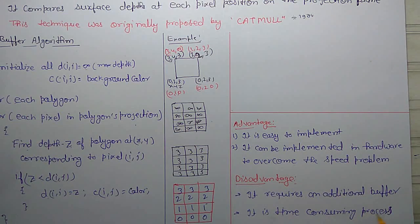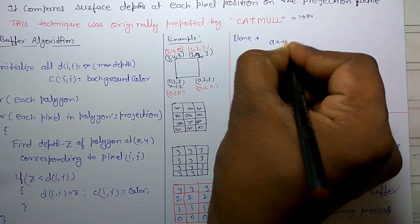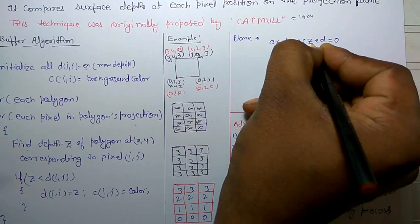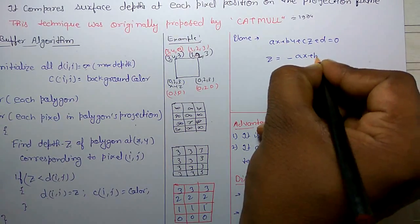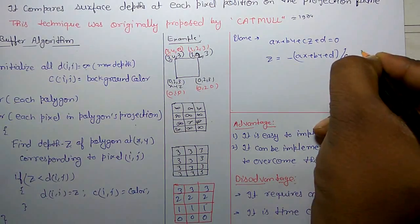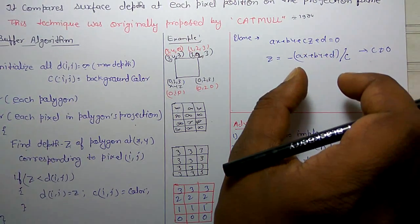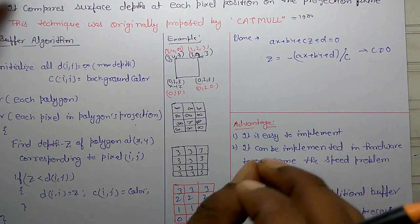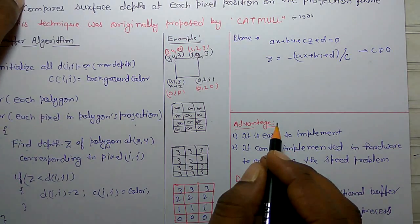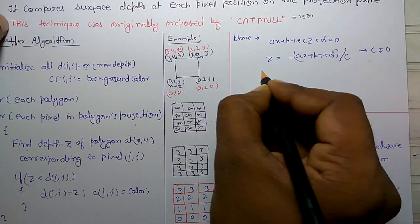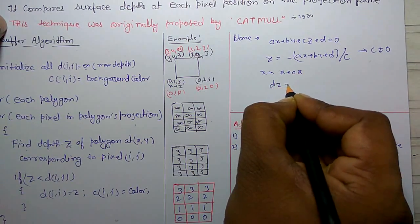It is also a time-consuming process. For the plane equation AX + BY + CZ + D = 0, the Z value is calculated as Z = -(AX + BY + D) / C, where C is not equal to zero. Calculating depth at each pixel with these arguments is highly expensive. However, the computation can be reduced to a single add per pixel using an incremental method where the scanline Y stays constant while X increases. If X increases by delta X, then DZ equals -A/C.